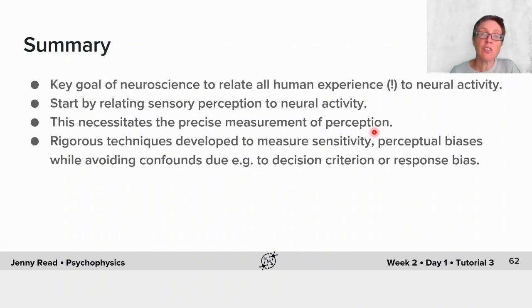Psychophysics as a field has developed very nice rigorous techniques to measure quantities of interest, such as sensitivity or perceptual biases, while avoiding the confounds which are all too easy to fall into, due, for example, to changes in the decision criterion or response biases. Thanks very much.